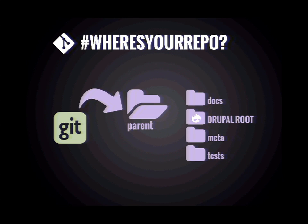How many of you do something a little bit more complicated, like this? You set up a parent directory. Inside that parent directory you have your Drupal root, which has Drupal core and all of your custom code. And you also have other things you want to track in your repository, so you take it one level up and put your Git repo in there, tracking everything including the Drupal root. Show of hands.